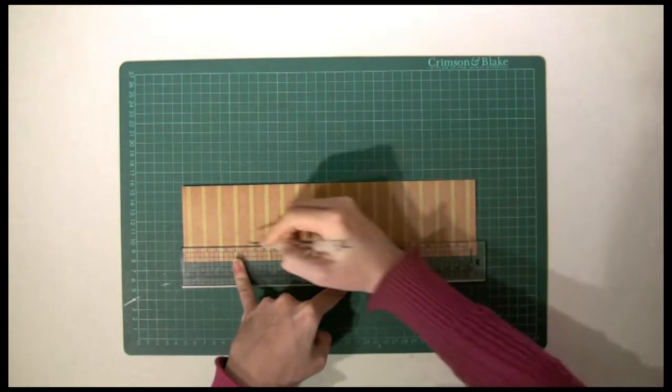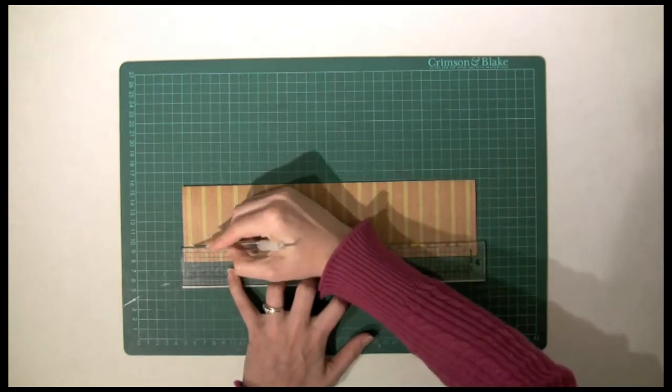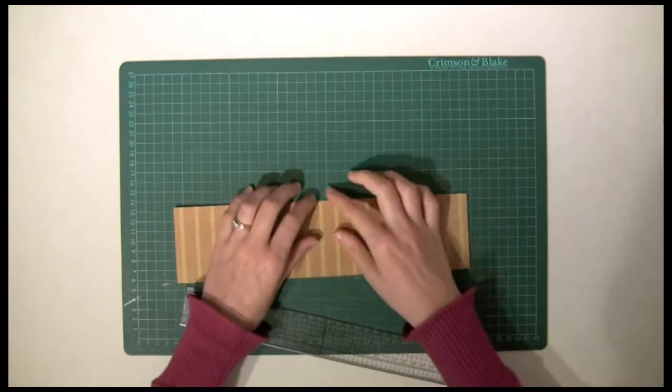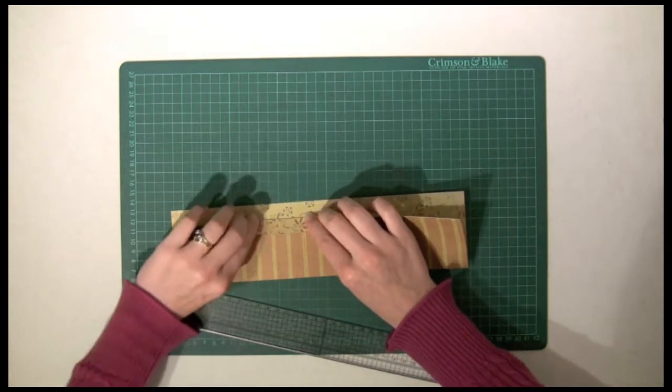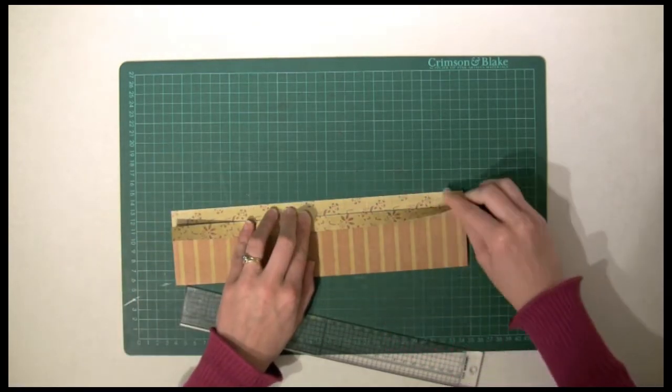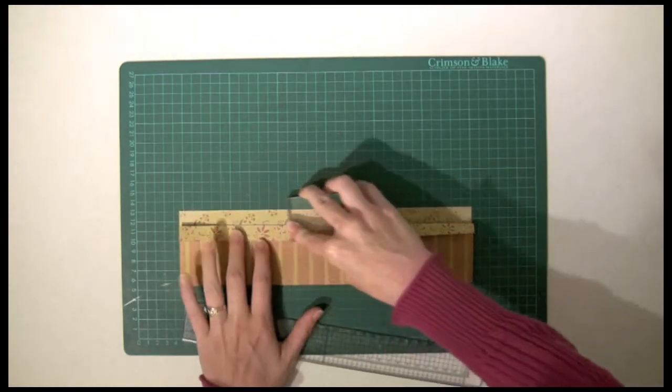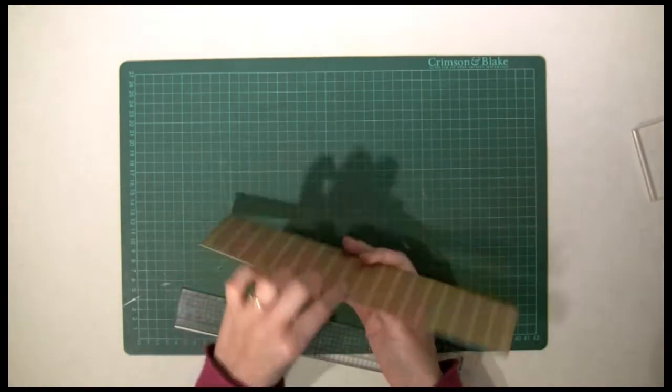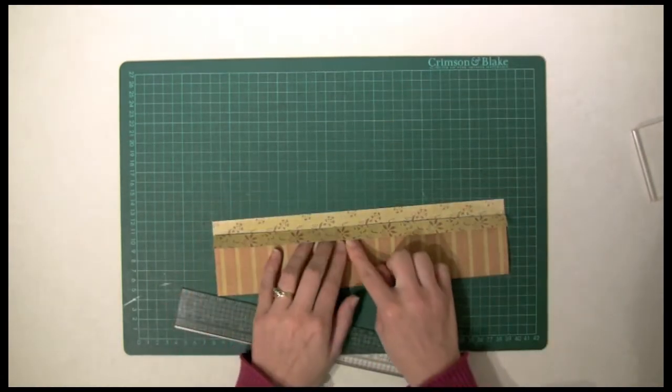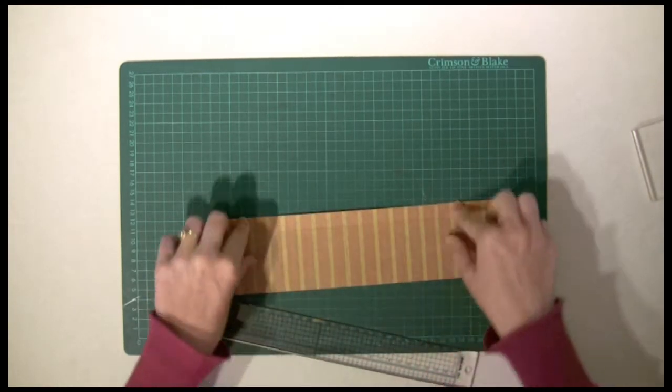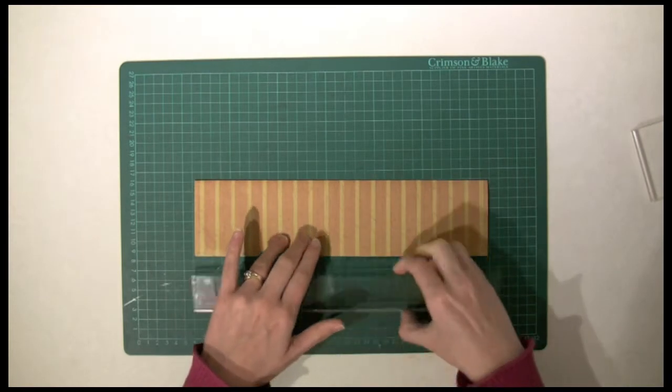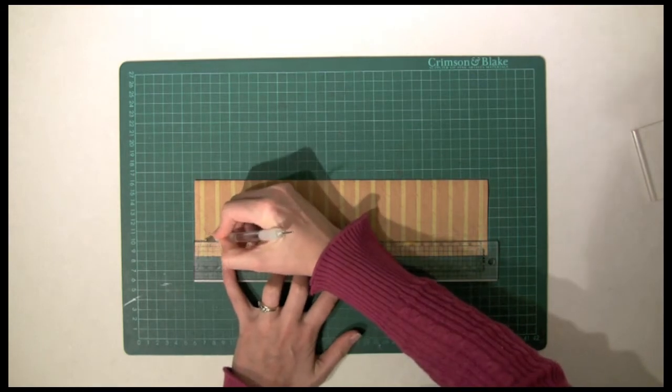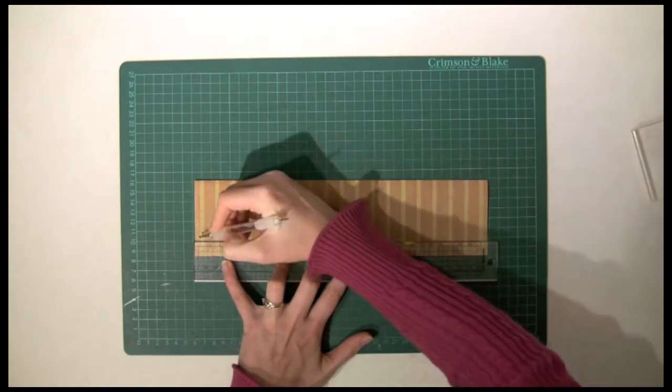I'm using an embossing tool for this one. Holding my ruler firmly in place, run across the embossing tool to create that crease on the page. Let's fold this over now. I'm going to use the edge of my acrylic block to flatten down that crease.